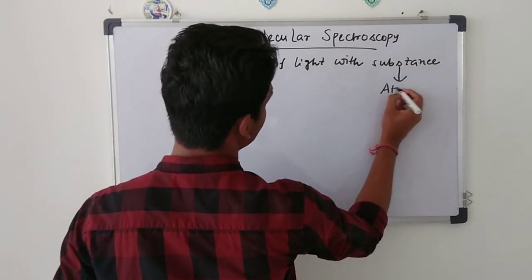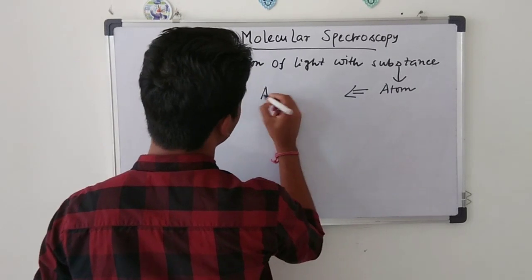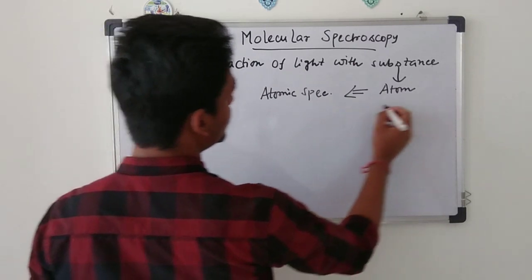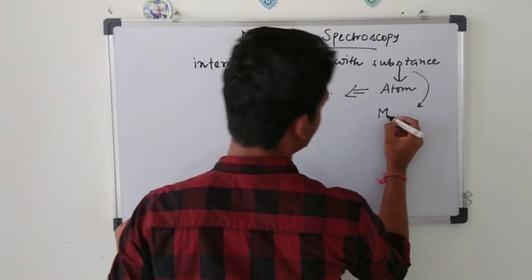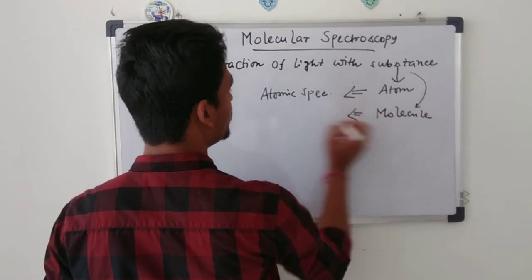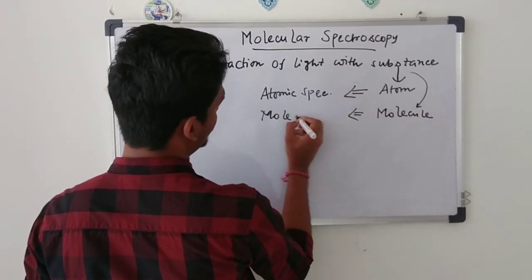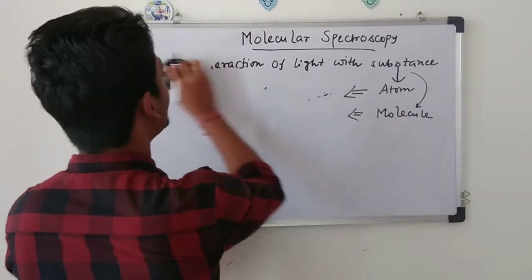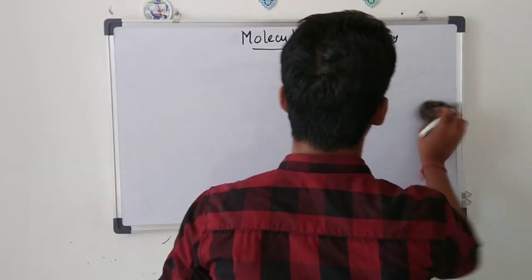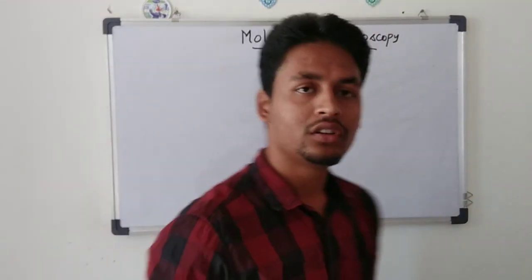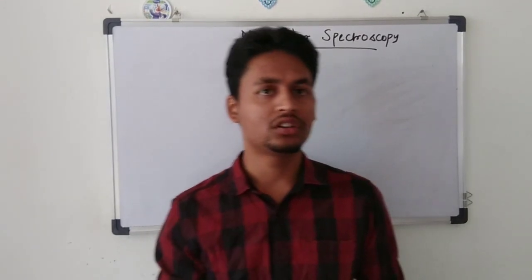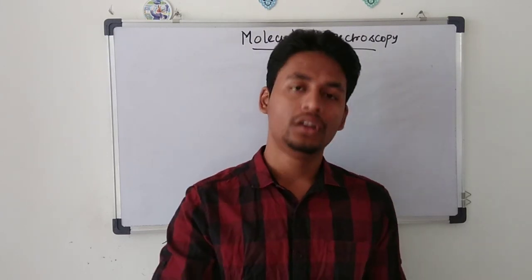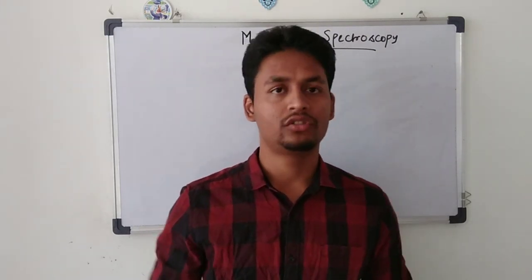If the substance is an atom it is called atomic spectroscopy, and if it is a molecule it is called molecular spectroscopy. Molecular spectroscopy consists of rotational spectroscopy, vibrational spectroscopy, Raman spectroscopy, rotational Raman, vibrational Raman, and electronic spectroscopy.